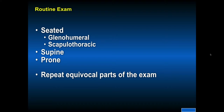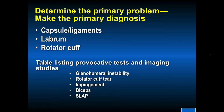Repeat the equivocal parts of the exam. Determine the primary problem and make the primary diagnosis. When you have examined the patient, looked at the x-rays, and are considering another test such as an MRI scan, write down what you feel the primary diagnosis is and communicate with the radiologist. That diagnosis may change, but make the diagnosis — don't just put 'shoulder pain.' Is it capsule ligaments, as in instability? Is it labrum? Is it rotator cuff? There may be secondary diagnoses, but based on the patient's sport and age, make the primary diagnosis.